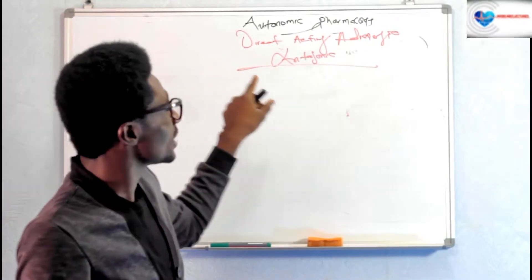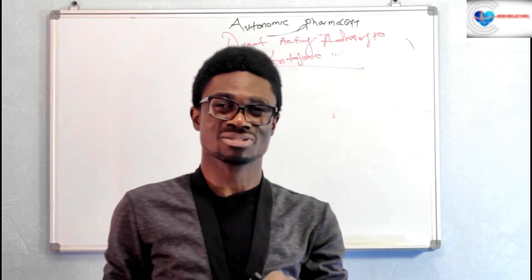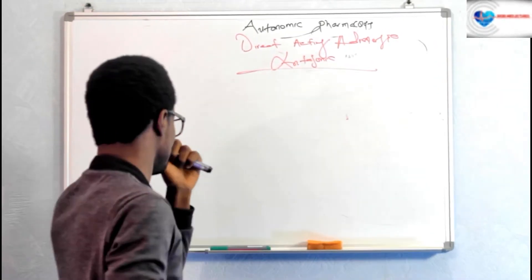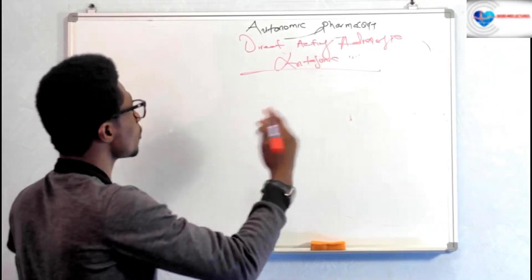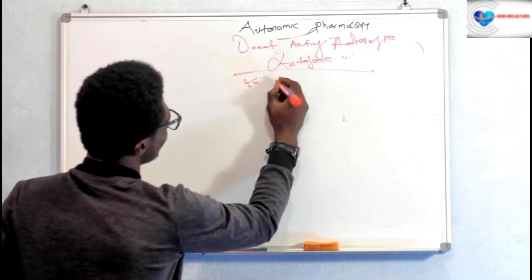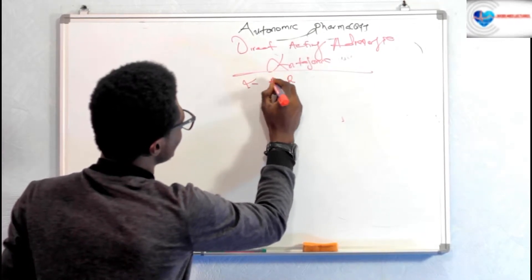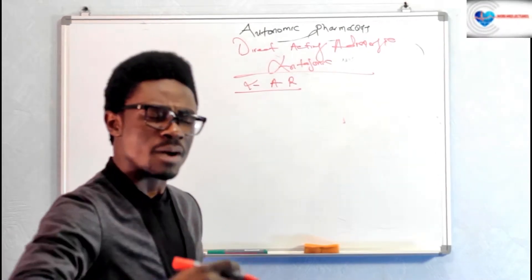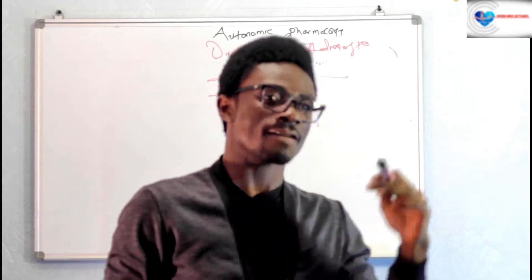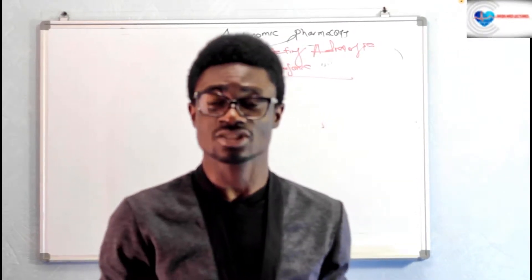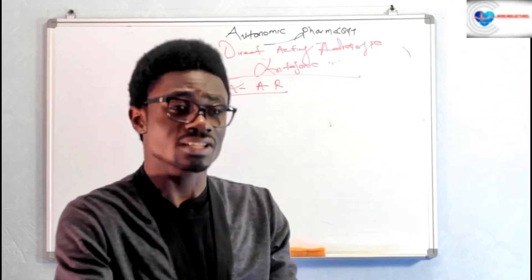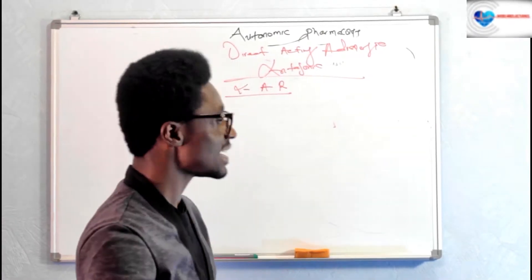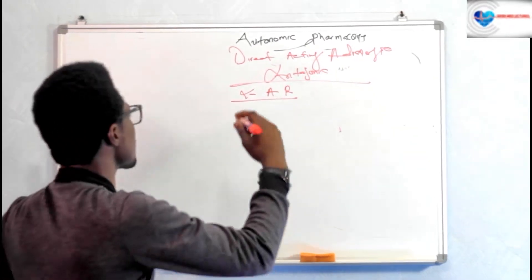So we're talking about pharmacological agents that bind to adrenergic receptors but don't stimulate them. Let's start with the alpha blockers, since we have alpha adrenergic receptors. Some agents are able to block both alpha-1 and alpha-2 adrenergic receptors — we call those the non-selective alpha adrenergic blockers, meaning they block both alpha-1 and alpha-2.